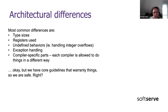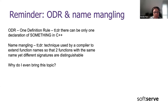Each compiler is allowed to do things in a different way and introduce special tweaks. Someone might say: well, there are C++ standards and core guidelines — maybe those help us skip most of these things. But not really. There are two more terms I need to bring up: the One Definition Rule, which means there can be only one relevant declaration of something at a time in C++.